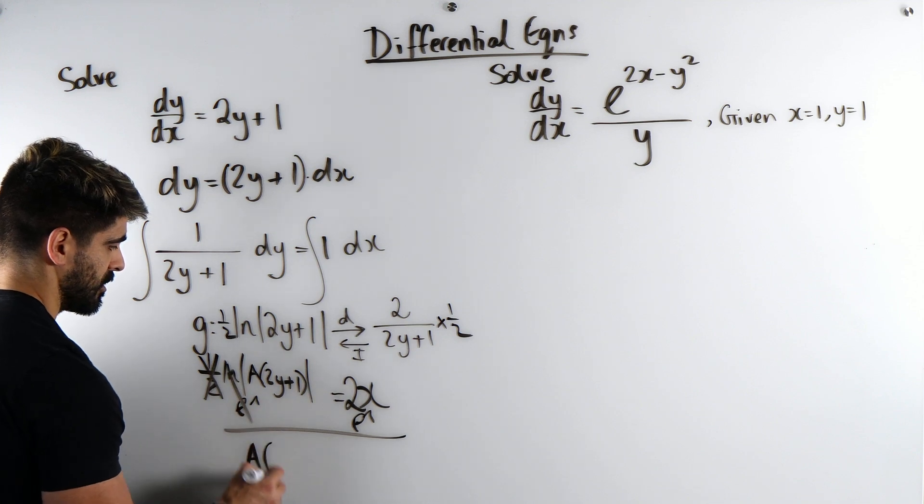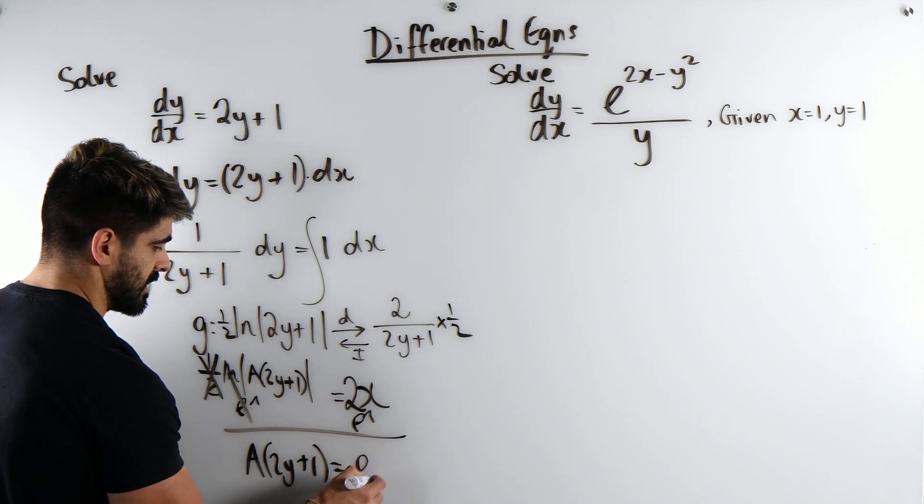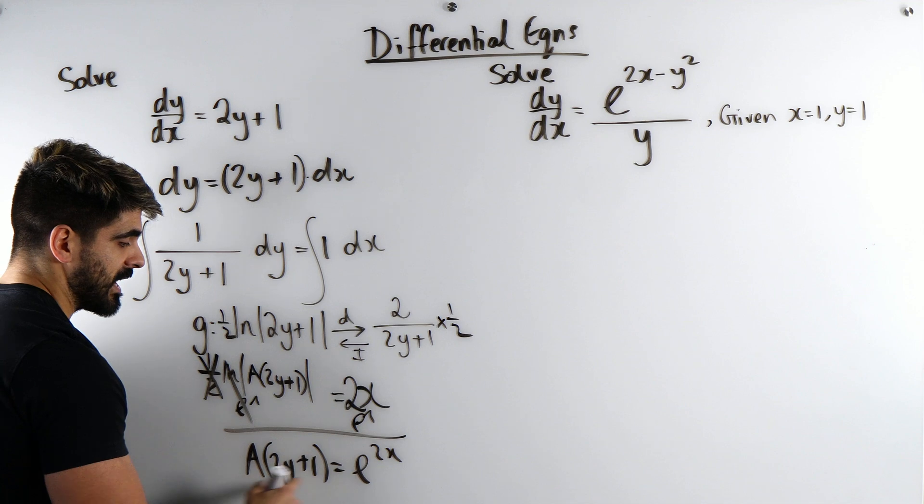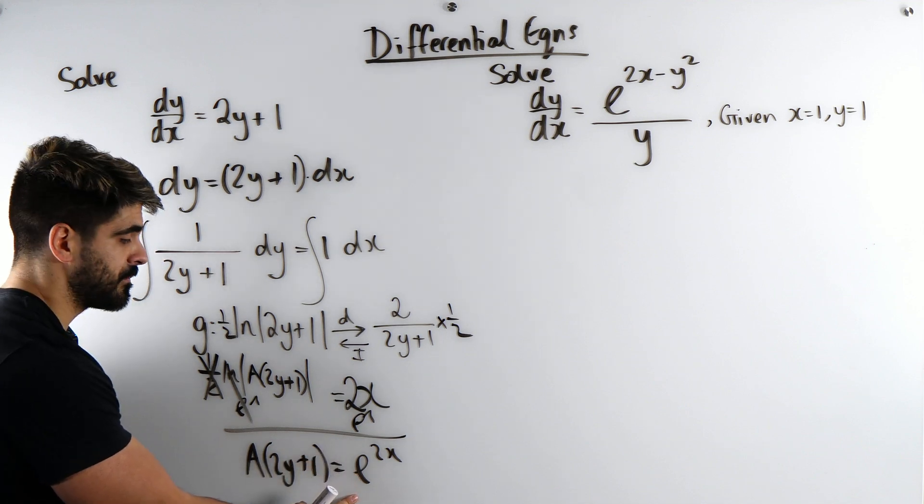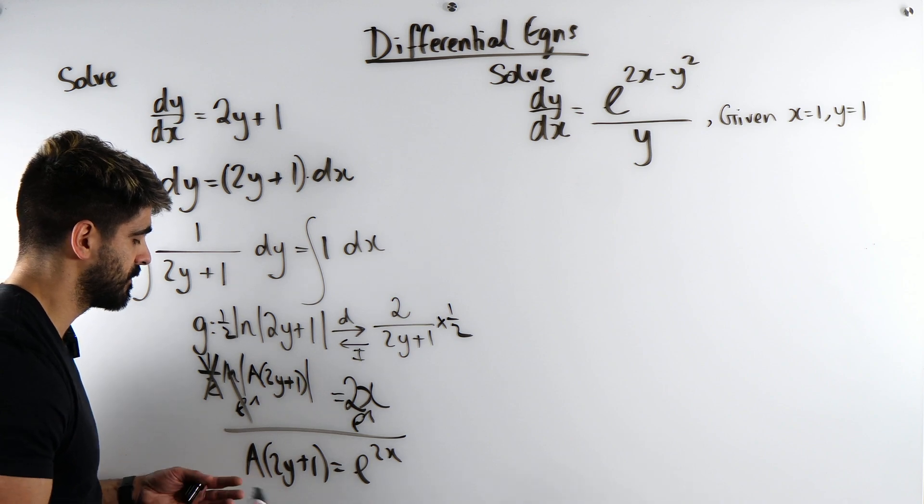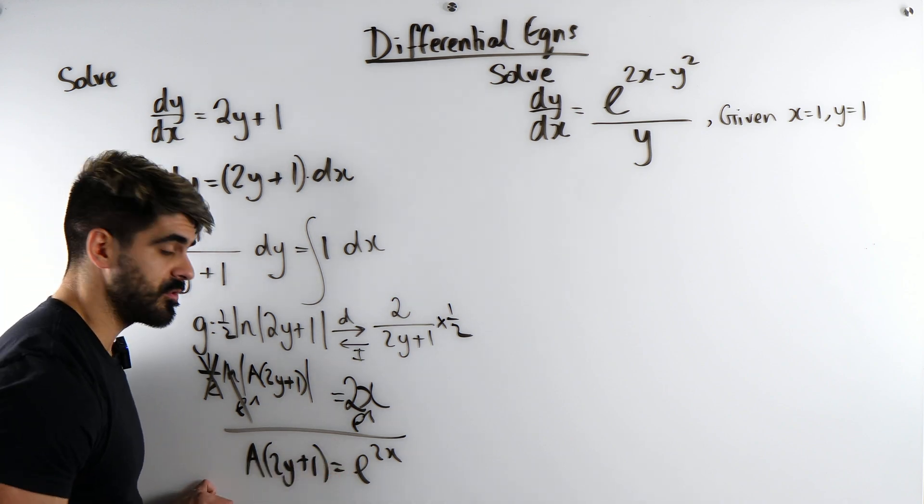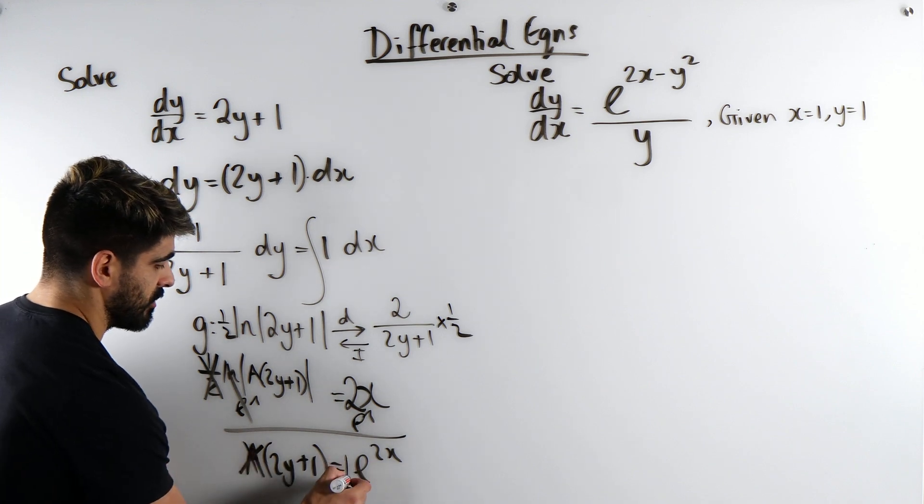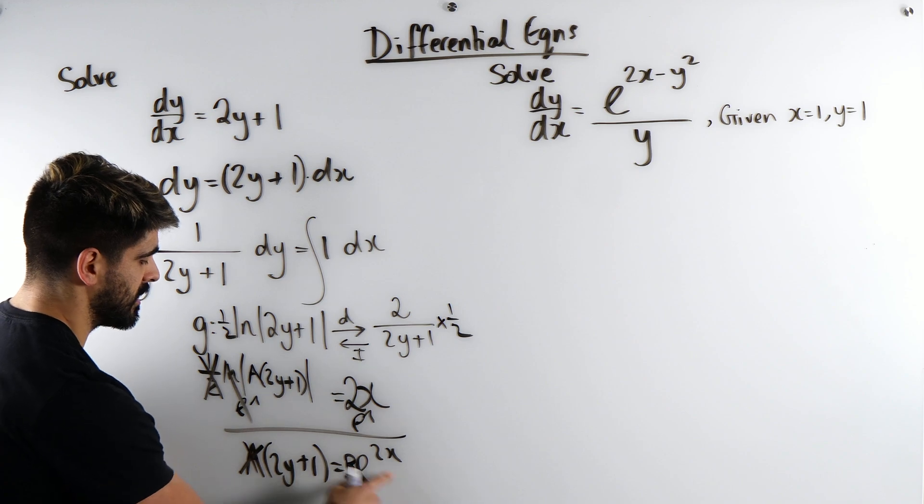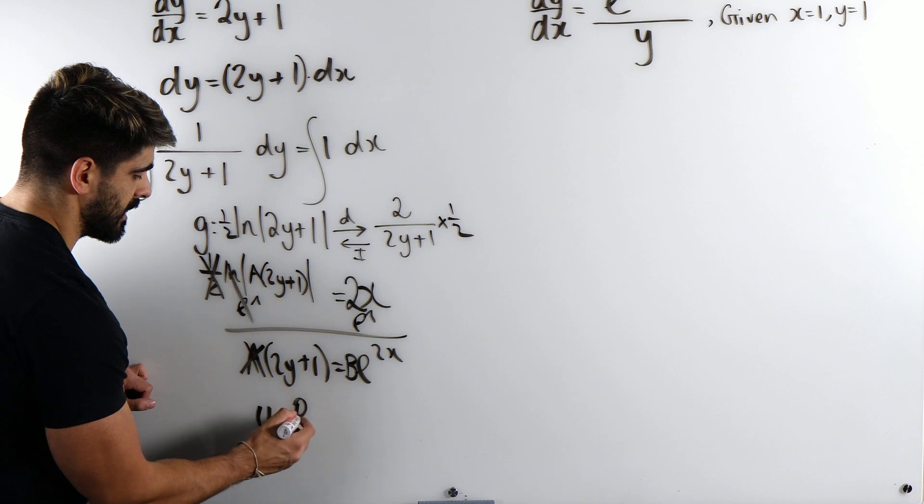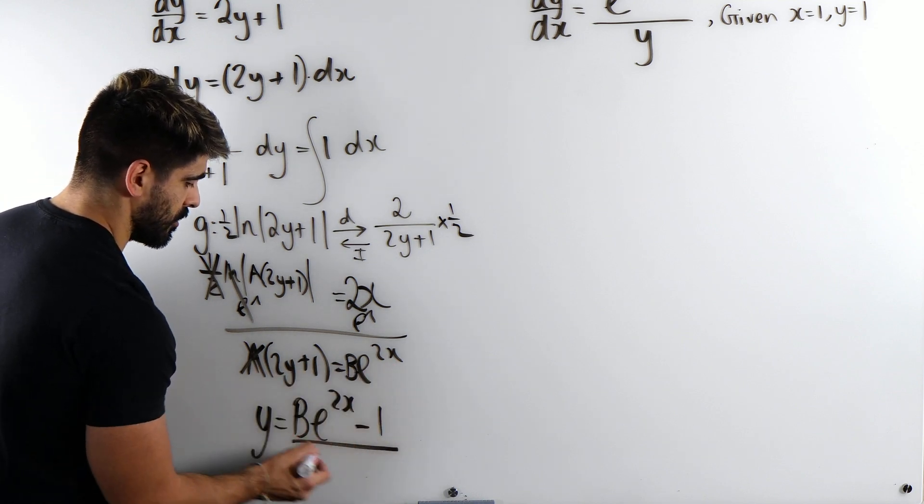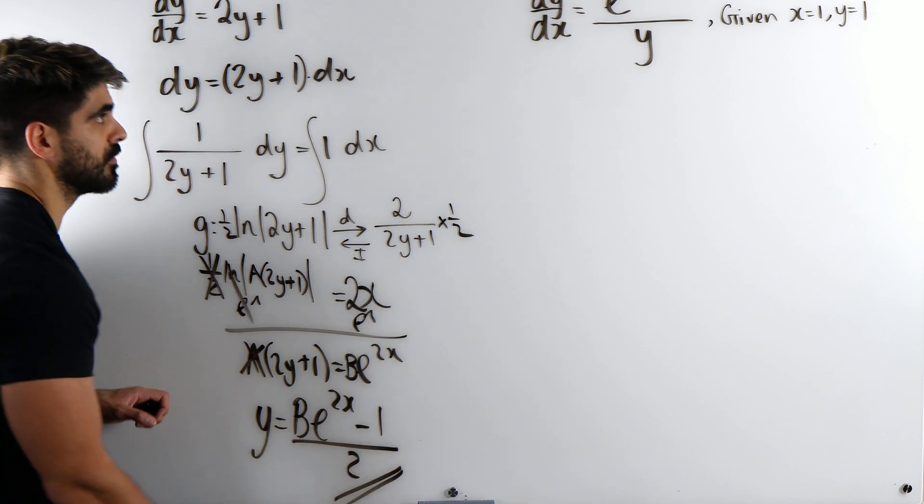So I get a(2y plus 1) is e to the power of 2x. Then we're going to divide through by a. Now a over here is a 1 over a over here, right? But 1 divided by an unknown constant is an unknown constant. So we don't write 1 over a. Instead, we write b. Yeah, we redefine it. Then we're going to minus 1 and divide by 2. y is b e to the power of 2x minus 1 all over 2. Beautiful, mate.